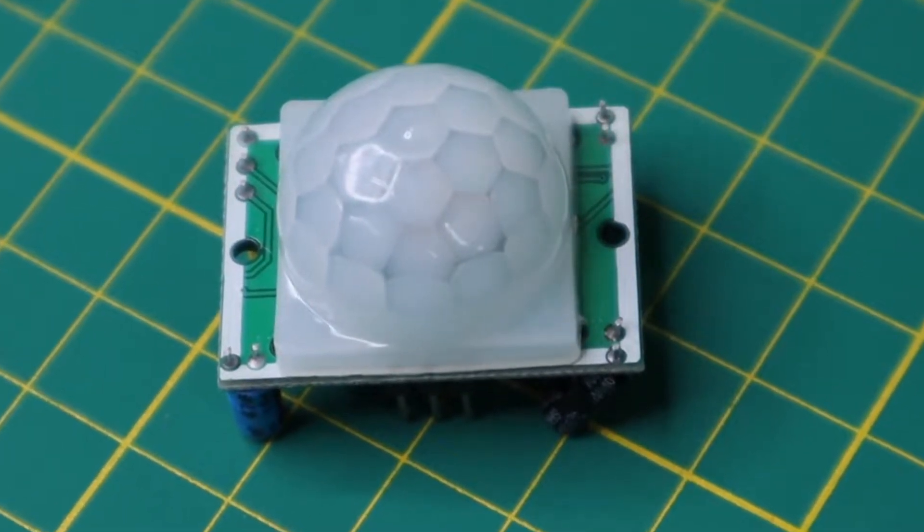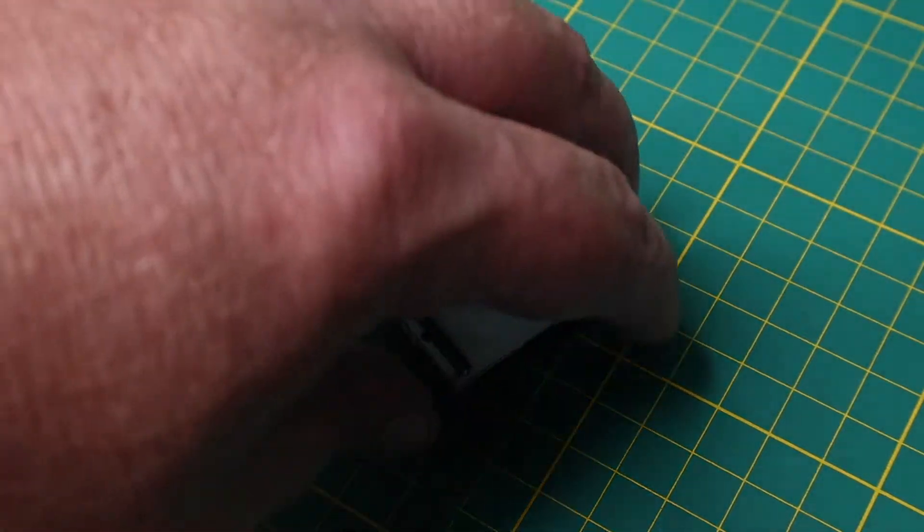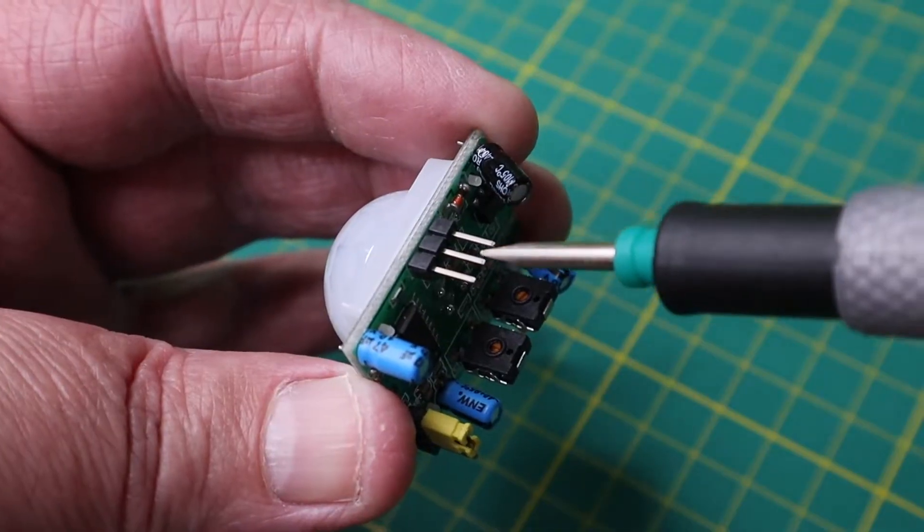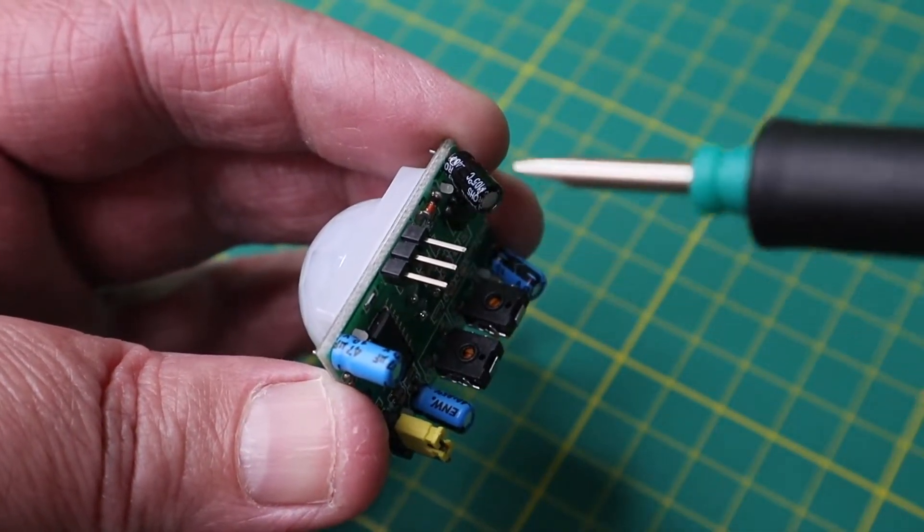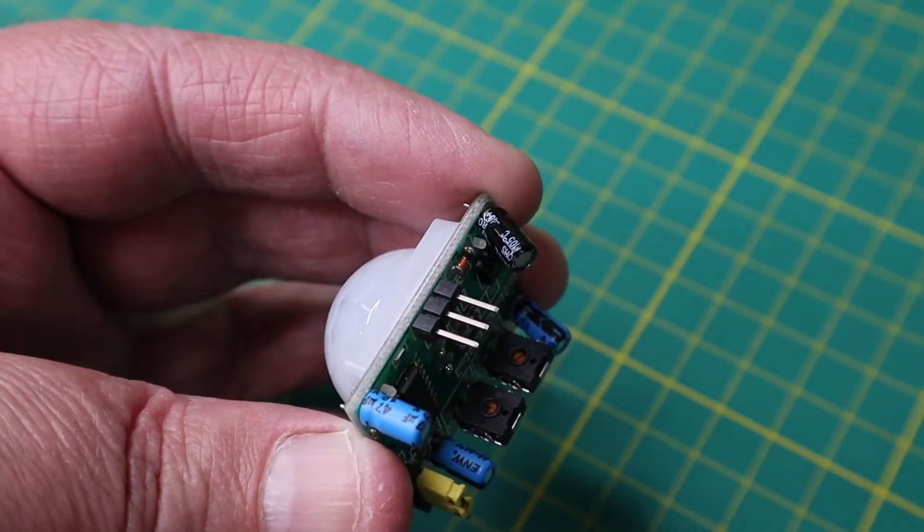Let's take a look at the PIR sensor itself. If we look at the bottom side, we will see three pin headers here, here, and here. Power, ground, and the middle pin is the output.